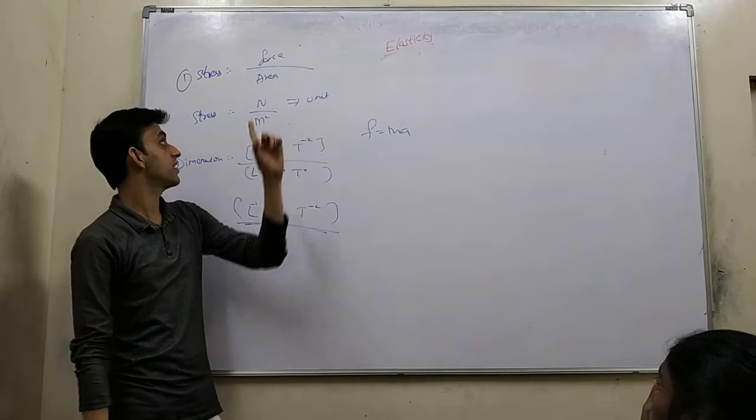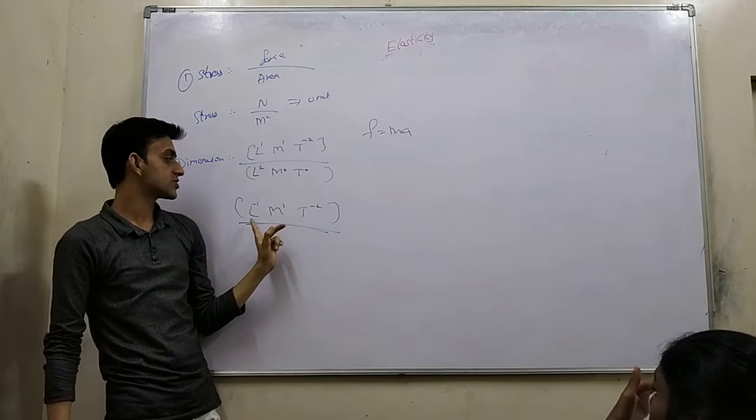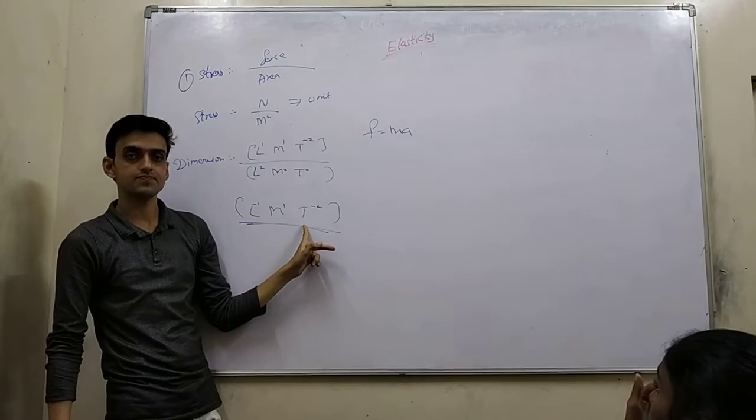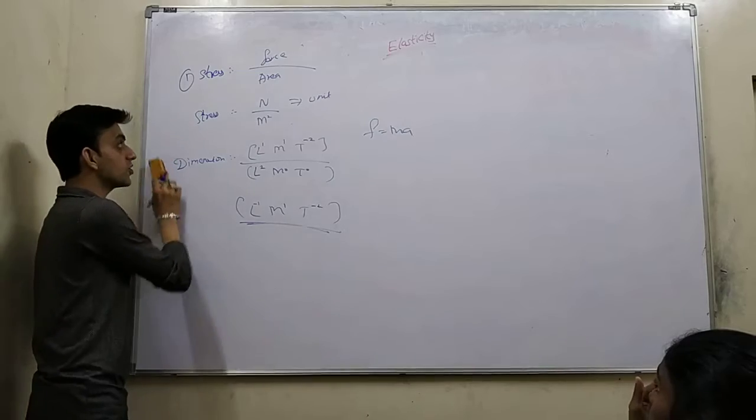So formula is stress equals force per unit area. You get it? And dimension is M¹L⁻¹T⁻². Force per unit area is the formula. Now guys, let's have a look. There are three types of stresses.